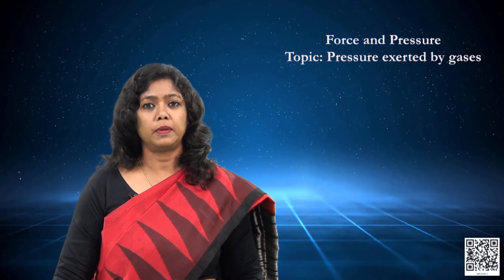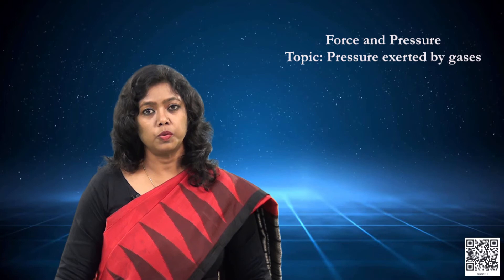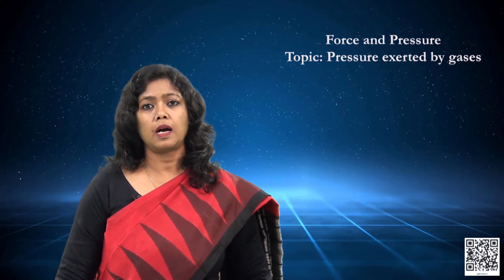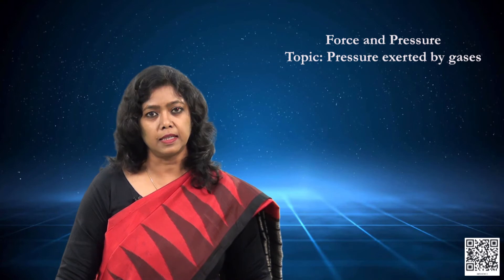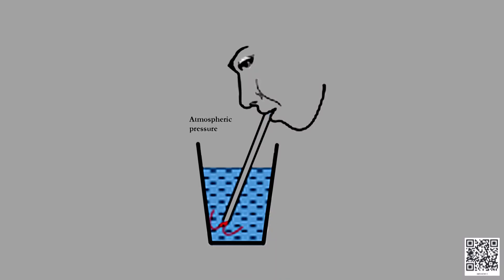Let us consider another very common example where we use atmospheric pressure. We all have used a straw to drink water or juice. Why does the juice come into our mouth when we suck? That is also because of atmospheric pressure. When we suck from the straw, the pressure inside the straw becomes low because we suck in the air present in it. The atmospheric pressure outside, acting on the surface of the liquid, is high, causing the liquid to rise inside the straw.